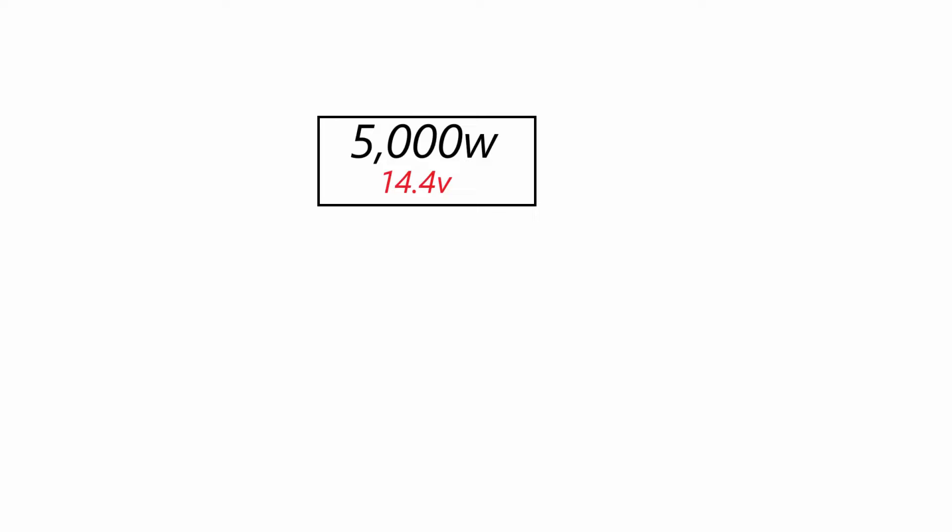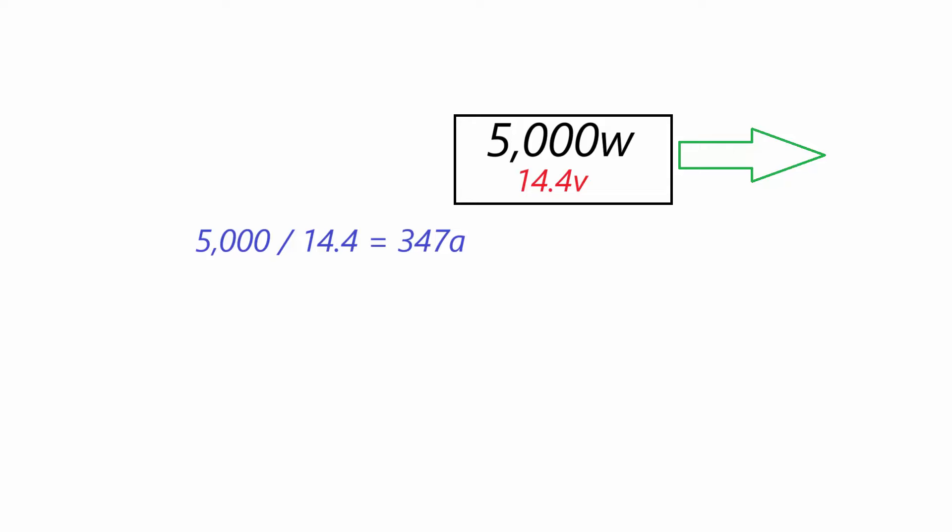For this example, we're going to assume that your amplifier is putting out 5000 watts at 14.4 volts. The first step would be to take that 5000 watts and divide it by the 14.4 and we're going to get an output of 347 amps.